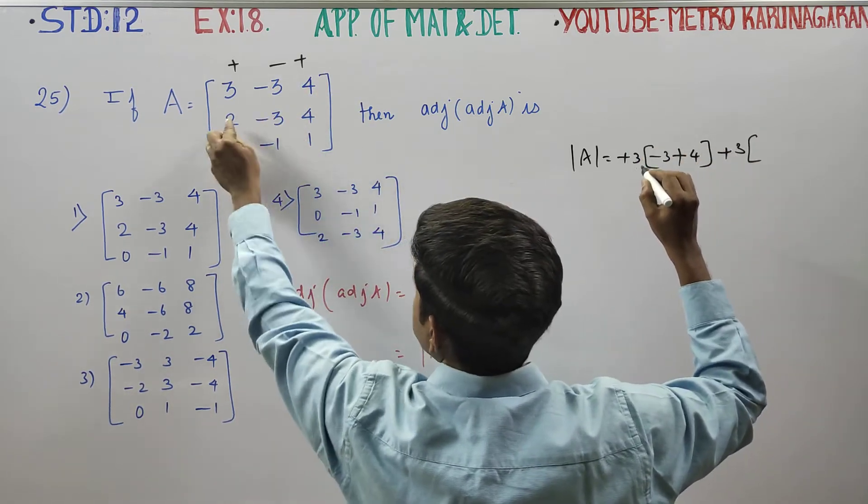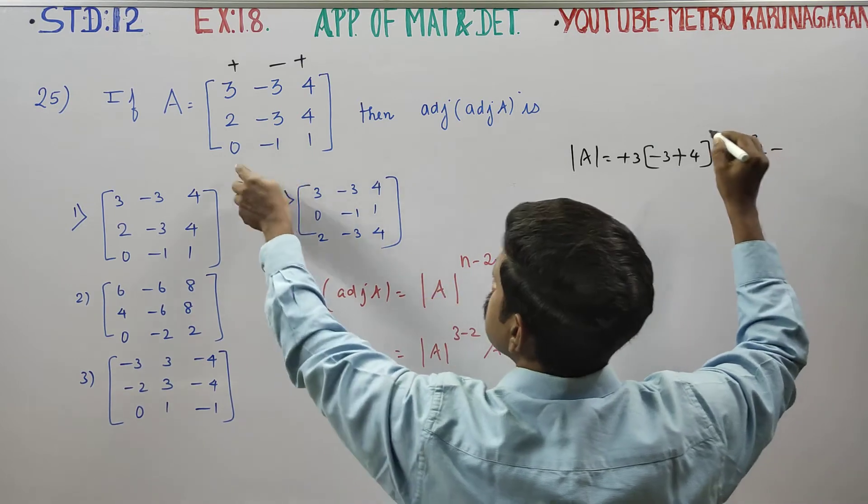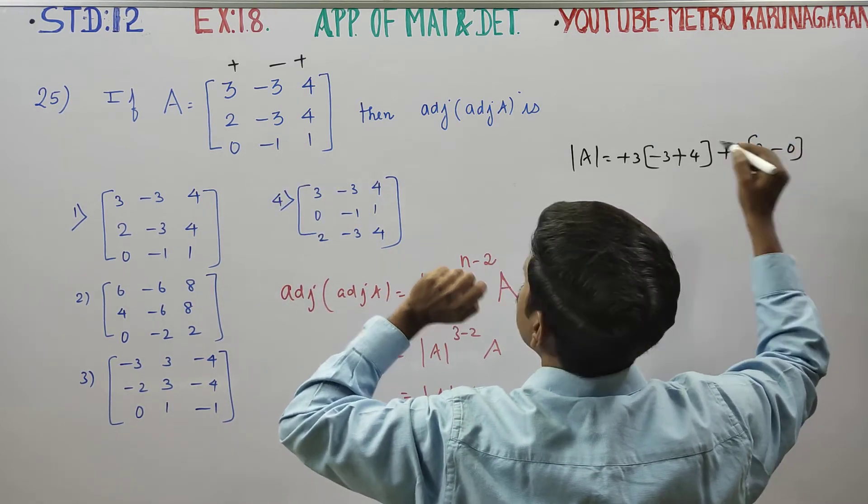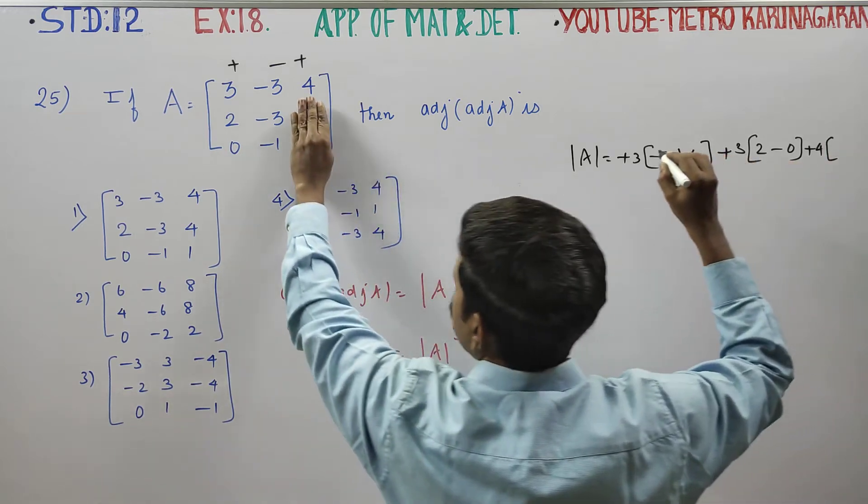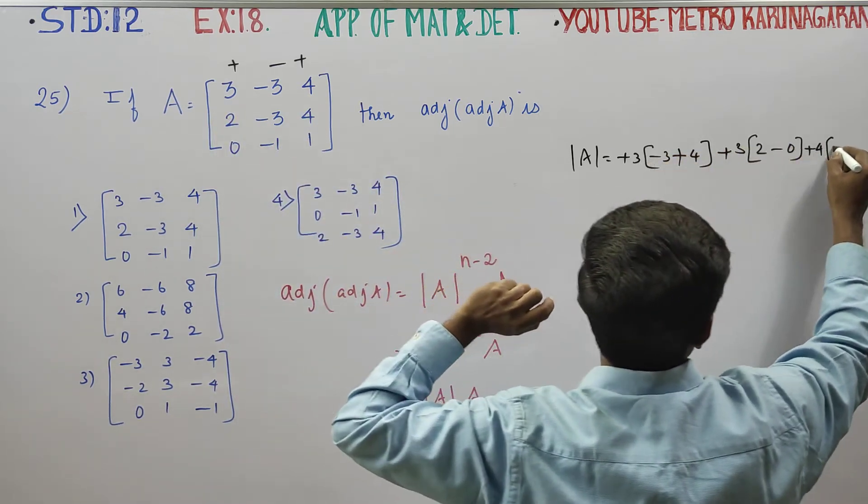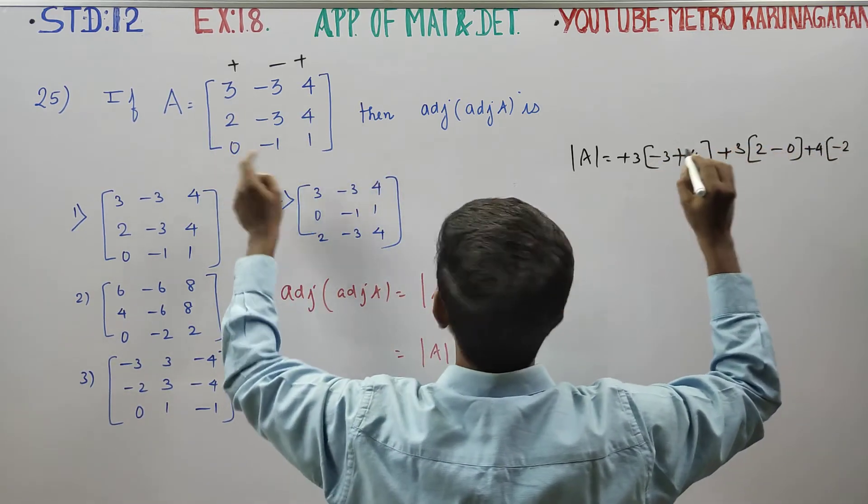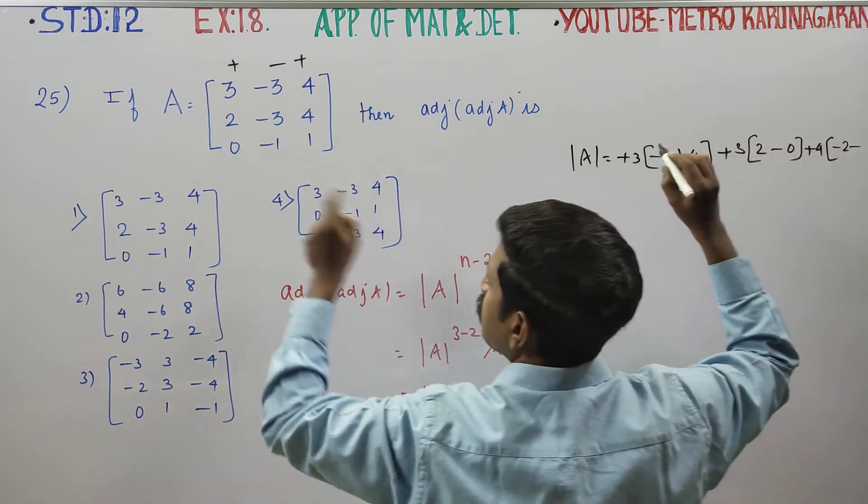Close, right-hand side, 2 minus 0 into 4 is 0. That's why plus 4 into, close. Right-hand side minus 2, minus 2, minus, minus, it is 0.